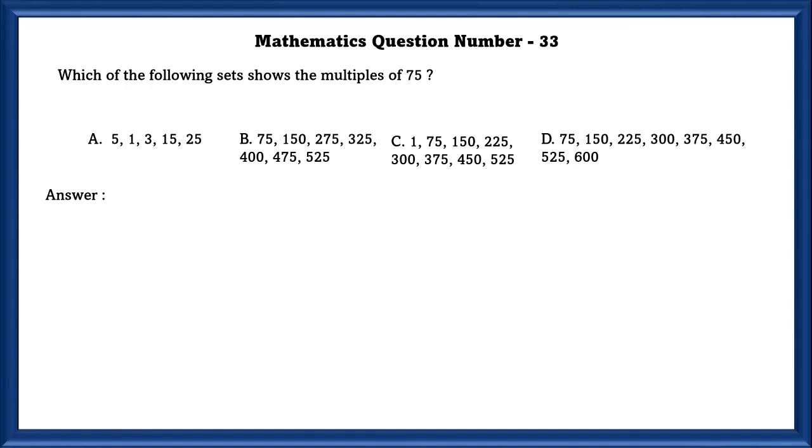Mathematics question number 33. Which of the following show the multiples of 75? As we can see, the D option shows the multiples of 75.